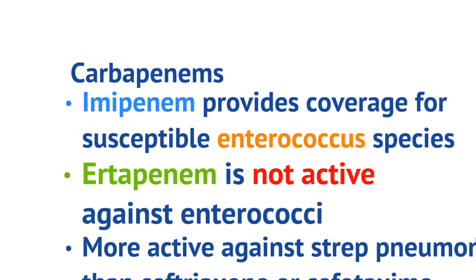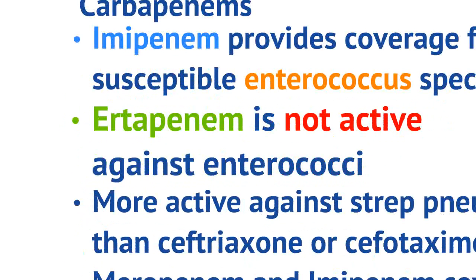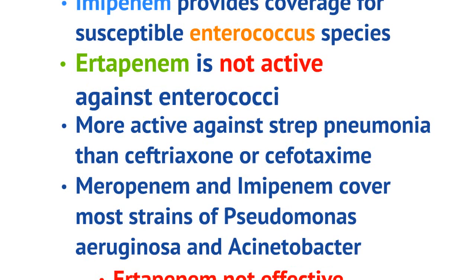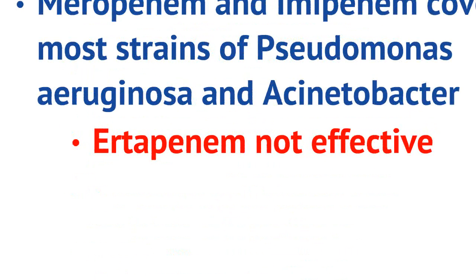As a whole, carbapenems are generally more active against strep pneumonia than ceftriaxone or cefotaxime. Another example of the differences in coverage is seen with pseudomonas and Acinetobacter. Meropenem and imipenem cover most strains of pseudomonas and Acinetobacter, but ertapenem does not cover these microbes.